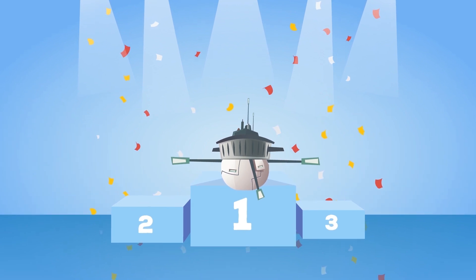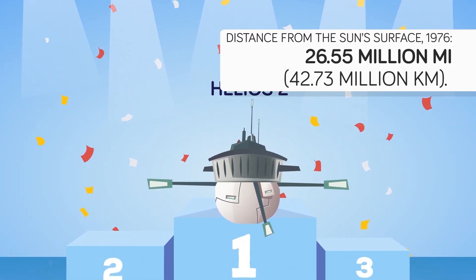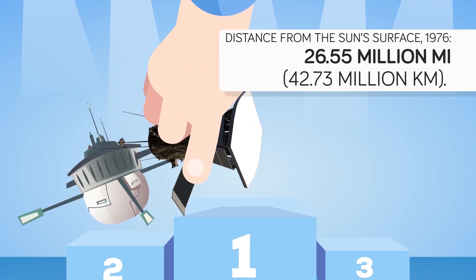The Probe has already set the record for the closest ever artificial object we've sent to the sun, beating the Helios 2 spacecraft's record of reaching a 26.55 million mile distance from the sun's surface in 1976.